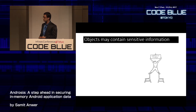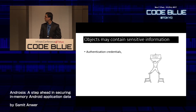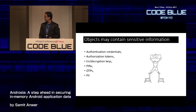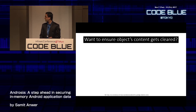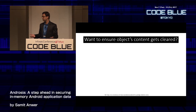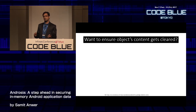Objects contain sensitive information — authentication credentials, authorization tokens, encryption/decryption keys, pins, OTPs, personally identifiable information — all maintained on the heap. Developers want to ensure object contents get cleared, though it's typically a second priority after getting code running. Nobody wants sensitive information lingering on the heap.